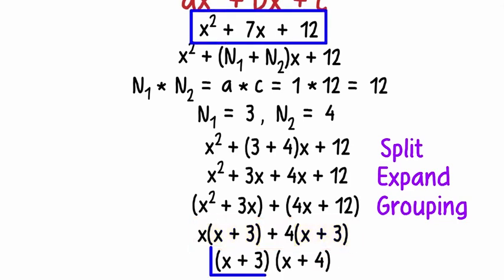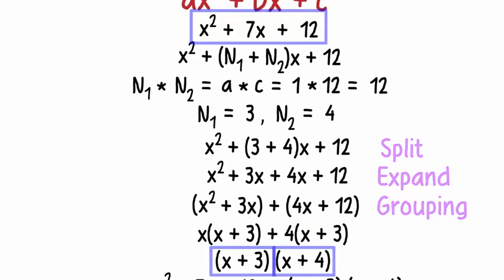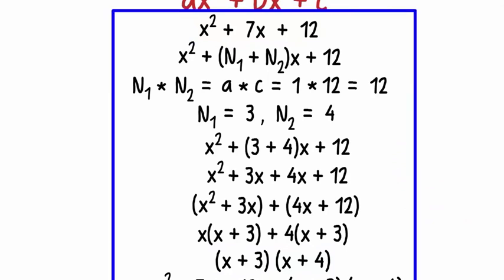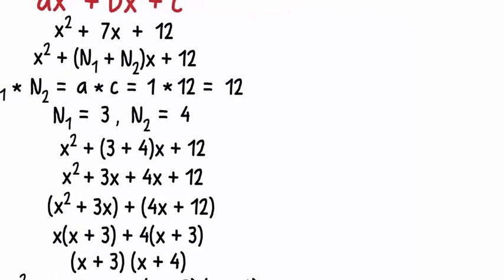Now in this polynomial, (x + 3) is common to both terms. Taking this common factor out from both terms we get this. So this quadratic polynomial has been factorized. The two factors of this polynomial are (x + 3) and (x + 4).